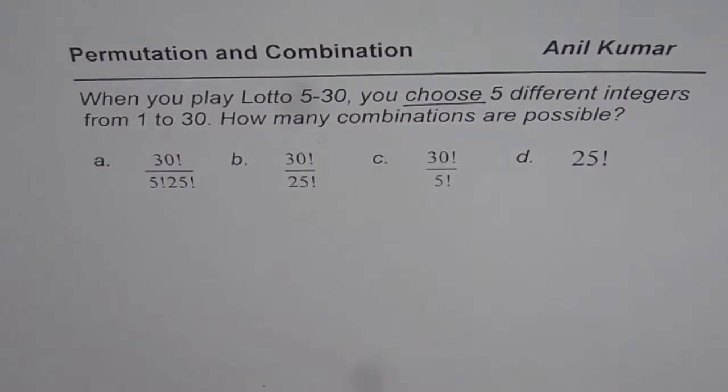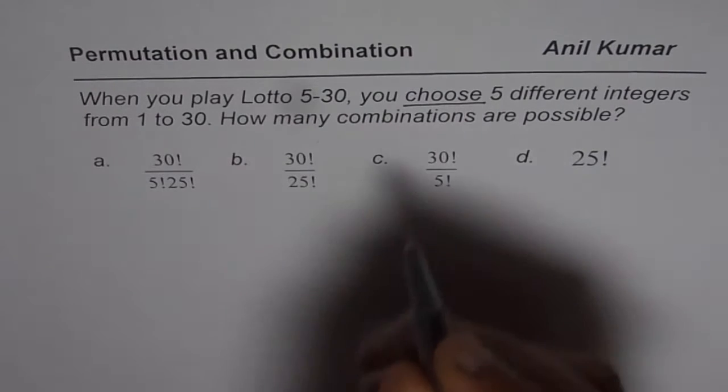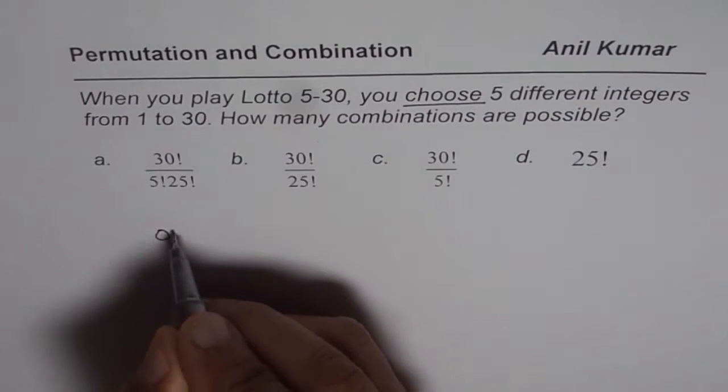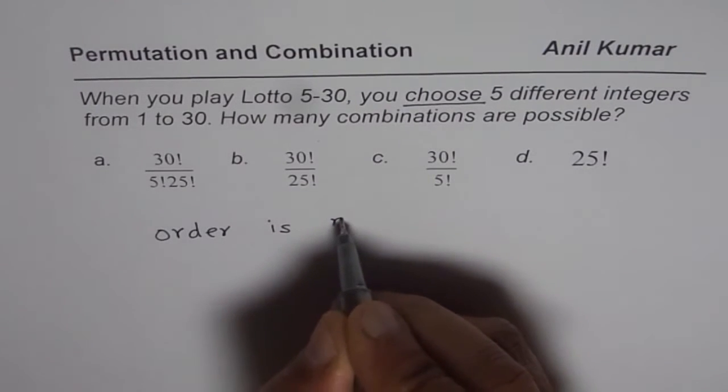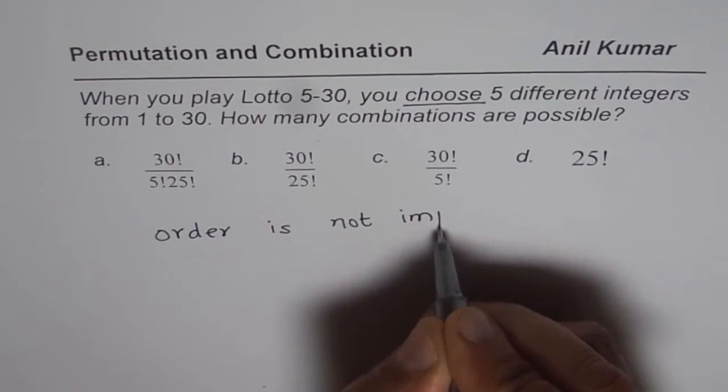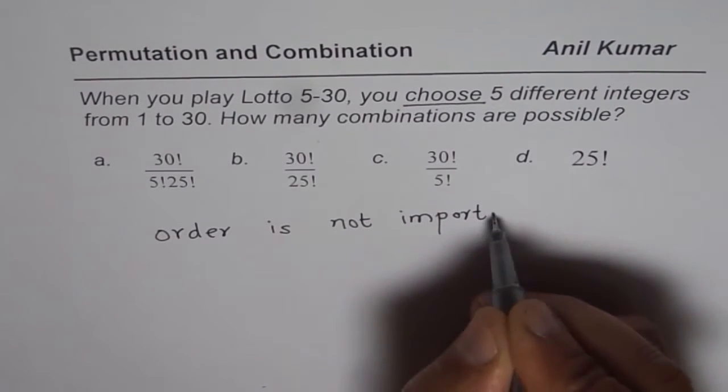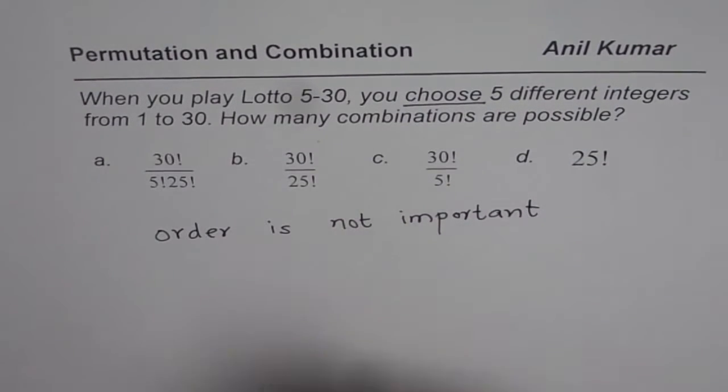So when you choose five different integers, order is not important. In this case, order is not important. So that helps you to decide whether it is a case of permutation or combination.